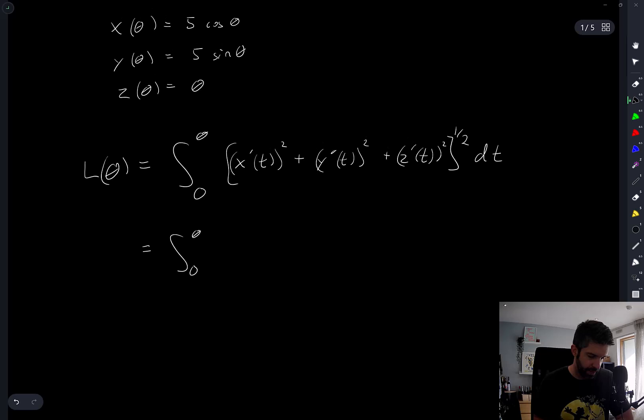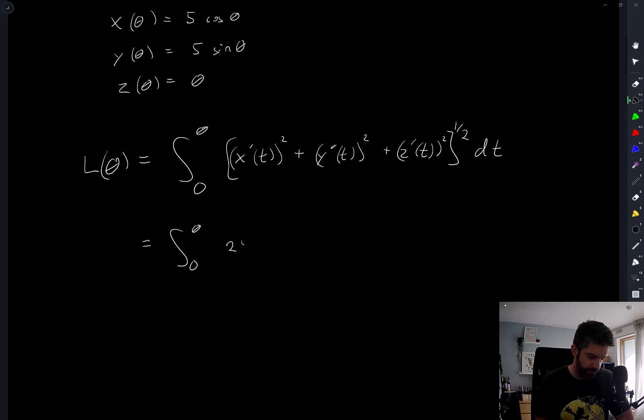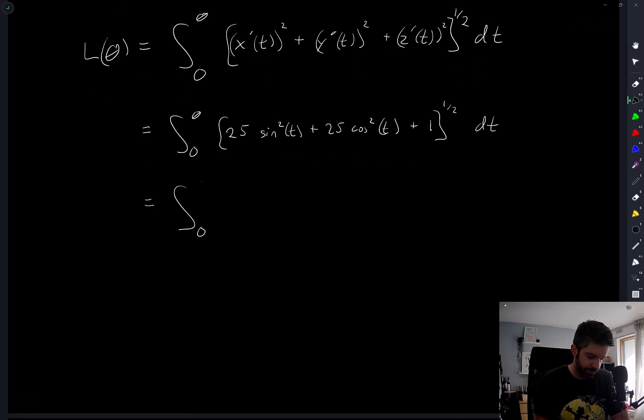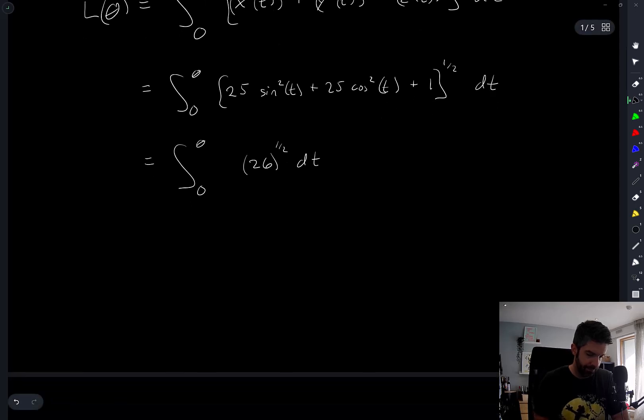So X prime squared is 25 sine squared T plus 25 cosine squared T plus 1, under a square root DT. This gives the integral from 0 to theta of 26 under a square root DT. So L of theta is equal to root 26 theta.